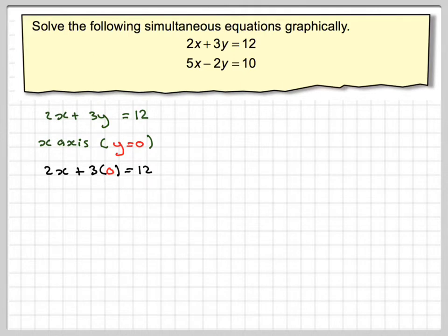3 times 0 is 0, so we just end up with 2x equals 12. To solve this, the opposite of multiplying by 2 is to divide by 2, and then we get that x is 6. So that gives the coordinate (6, 0).